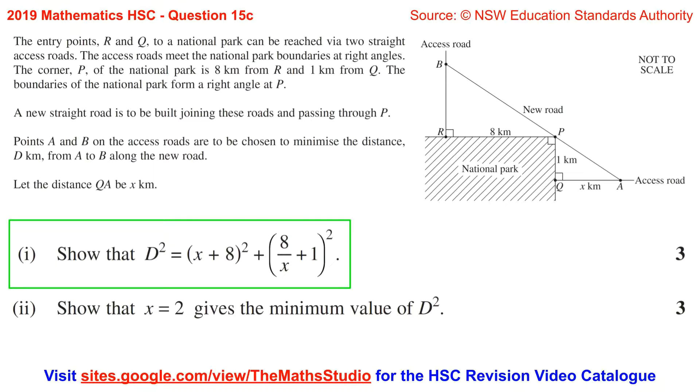Part 1. Show that d squared equals x plus 8 all squared plus 8 over x plus 1 all squared.